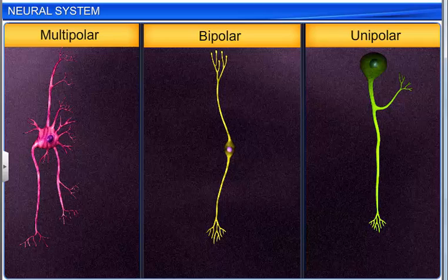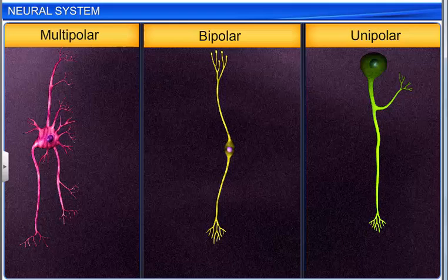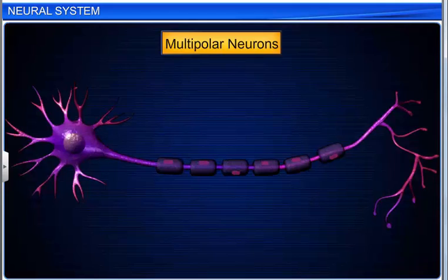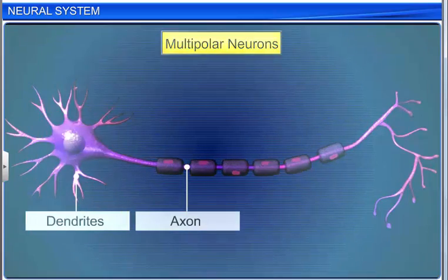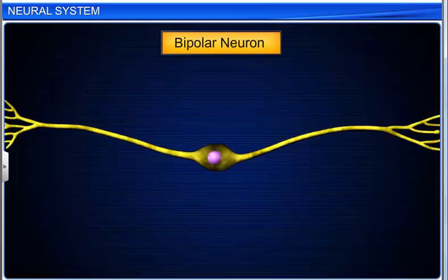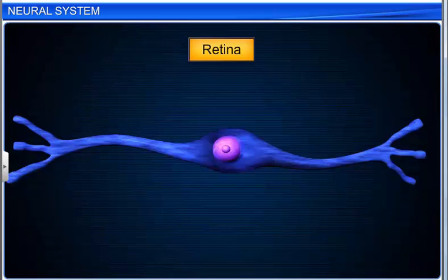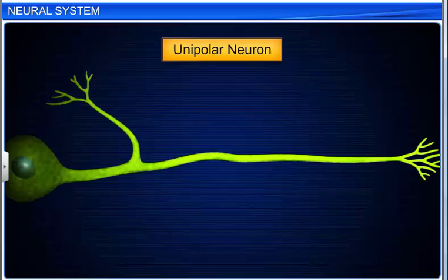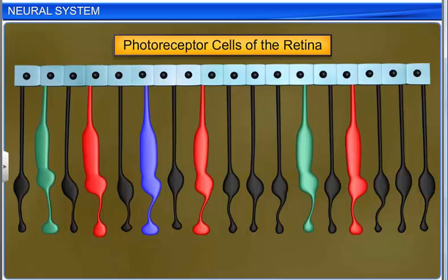On the basis of the number of axons and dendrites, neurons are divided into three types: multipolar, bipolar, and unipolar. Multipolar neurons have one axon and two or more dendrites, and are found in the cerebral cortex. Bipolar neurons, with one axon and one dendrite, are found in the retina of the eye. Unipolar neurons have a cell body with one axon only, and are found in the photoreceptor cells of the retina.